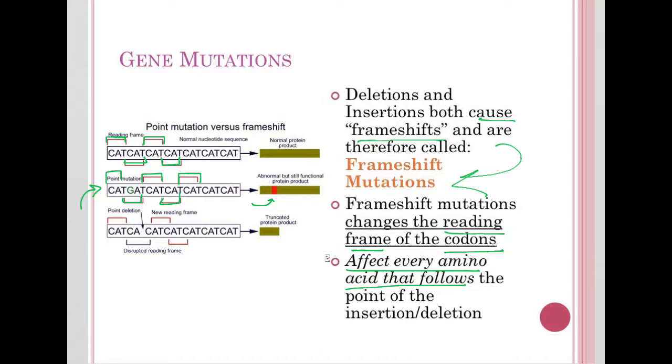However, if you get an insertion or a deletion, we now disrupt the reading frame. So here we've just deleted that T. So now let's look at our codon: C-A-T, C-A-C, A-T-C, A-T-C, A-T-C. So you see how that deletion caused us to now have a different consideration for what our set of three codons are. It now moved us one over.